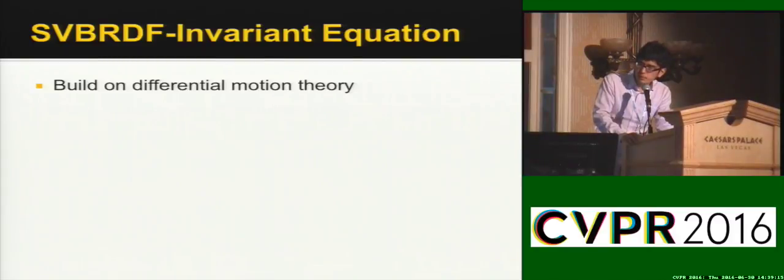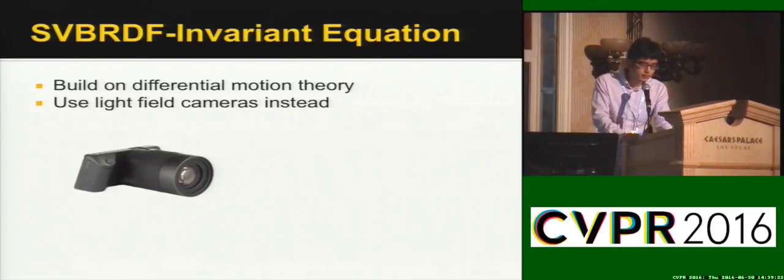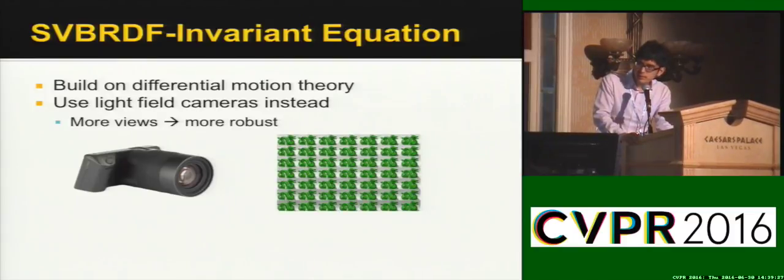So let's first take a look at how we derive this equation. To derive it, we build on differential motion theory. However, instead of using differential camera motions, we use the light field camera instead, which can be thought of as a multi-camera array but contains much more views, so it should be more robust.